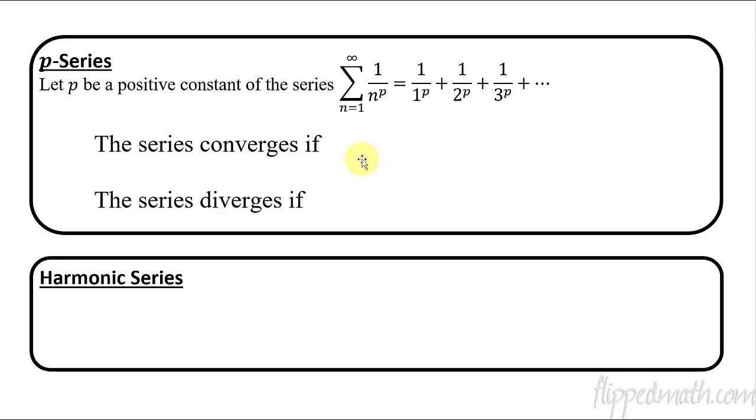So here is what a p-series is. We're going to say p is a positive constant and it's in the denominator. So p is this exponent of the series, so it's n to the p. That just means we're doing a series: 1 to the p plus 1 over 2 to the p plus 1 over 3 to the p, etc., all the way to infinity. That is a p-series as long as that exponent p is a positive constant.